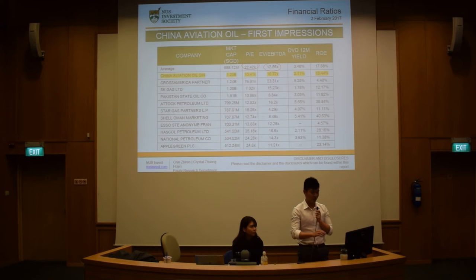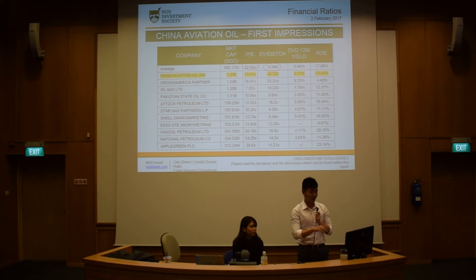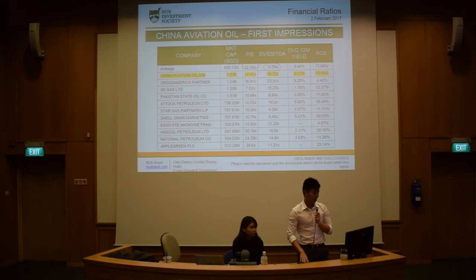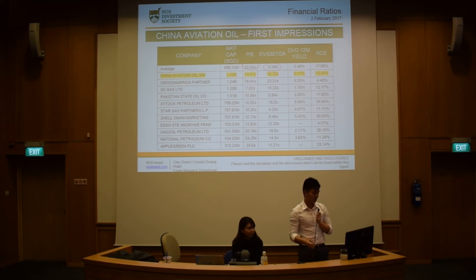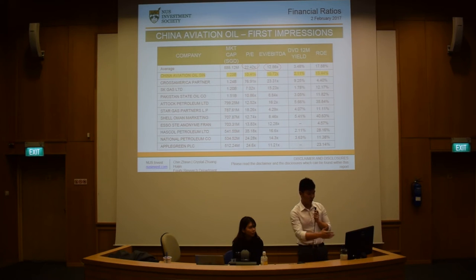This is from Bloomberg — about 10 companies with very similar operations and market size compared to China Aviation Oil. You might think you don't have time to do this, but it actually takes about five minutes on Bloomberg, and you can get a lot more ratios than what I'm showing now. Bloomberg will auto-generate an algorithm that helps you find companies of similar size and operations, and it will generate all the ratios for you. The first step: as you can see, the average PE is about 22 times and the EV to EBITDA is about 12 times.